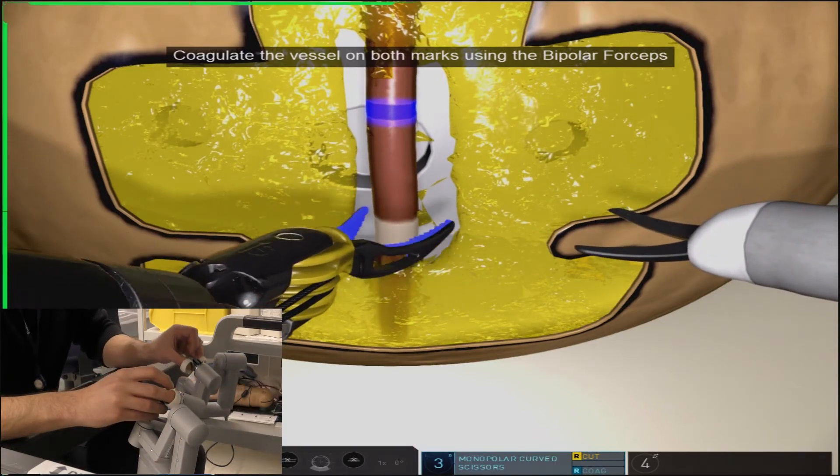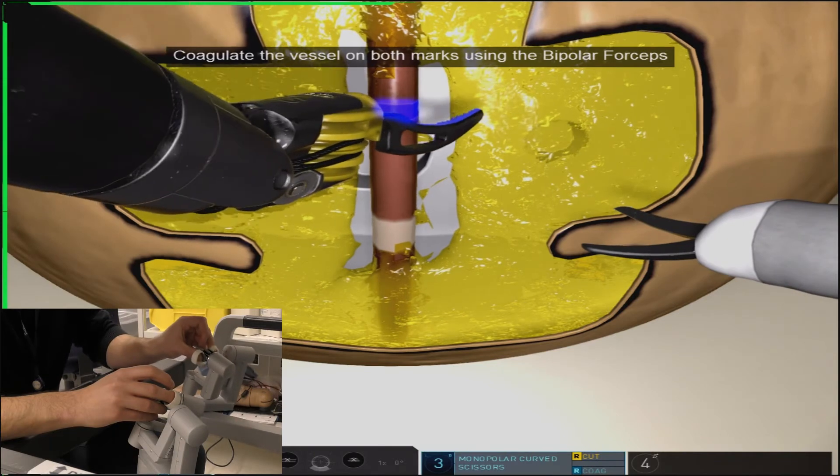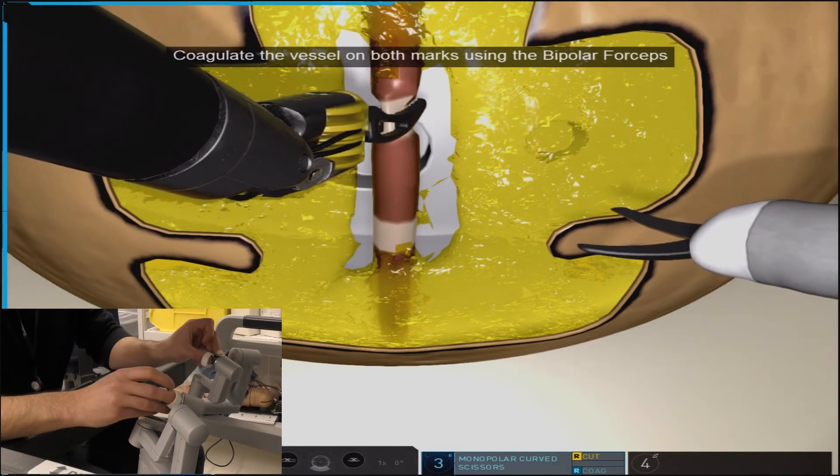Simply grab the vessel at the two indicated points and perform coagulation until you see that portion of the vessel turn white.